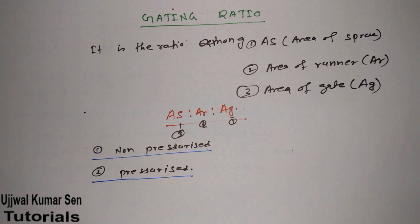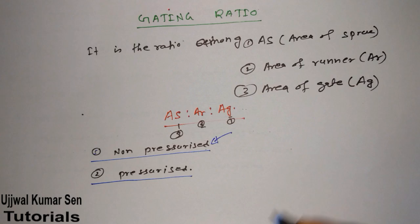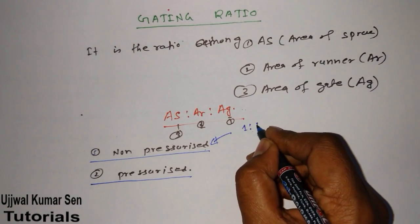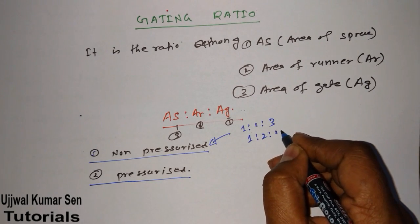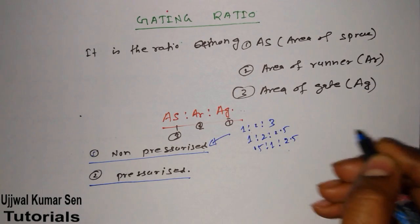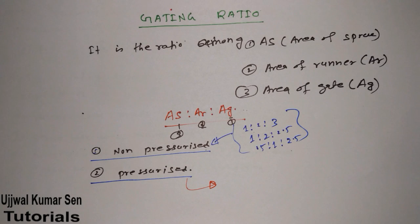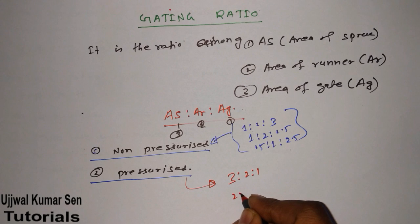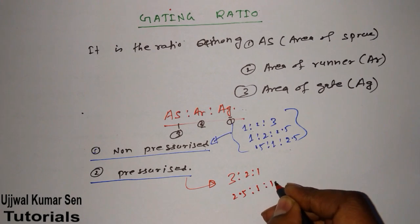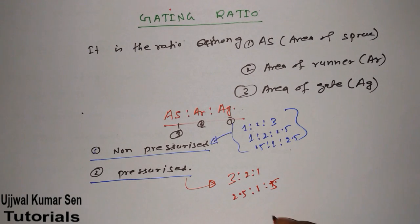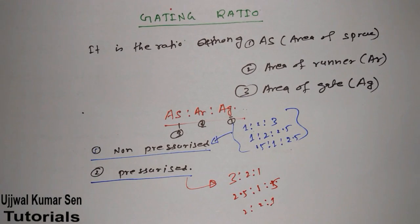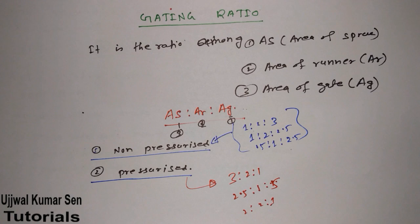Whether a system is pressurized or non-pressurized depends on the gating ratio. Examples of non-pressurized gating systems: 1:2:3, 1:2:2.5, 1.5:1:2.5 — in these the gate area is largest. Examples of pressurized gating systems: 3:2:1, 2.5:1:0.5, 2:2:1 — in these the gate area is minimum.